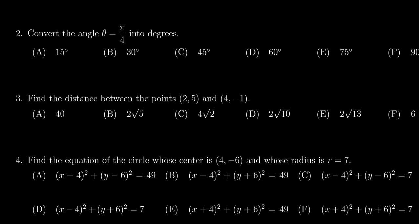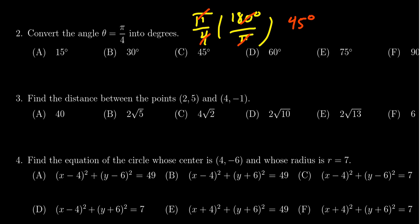To take our angle, pi over 4, and convert it into degrees, we need to multiply it by 180 degrees over pi. We'll see that the pi cancels out very quickly. We then simplify the fraction 180 divided by 4 — 4 goes into 180 45 times. So we see the correct answer is 45 degrees.